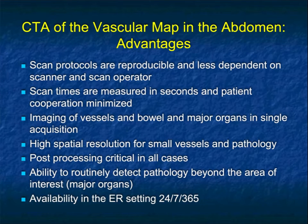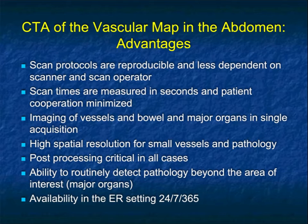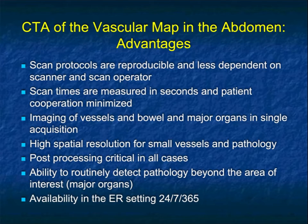The reason CTA is so valuable in looking at the abdomen — and I will be focusing on the abdomen in this talk, with another talk on acute vascular disease in the chest at a later date — is that scan protocols are reproducible and not dependent on the scanner and scan operator. You can get a good study most of the time, unlike MR which can be very difficult. Scan times are typically measured in seconds and patient cooperation is minimized, which is especially important in sicker patients. Imaging of the vessels as well as the bowel and major organs is accomplished in a single examination.